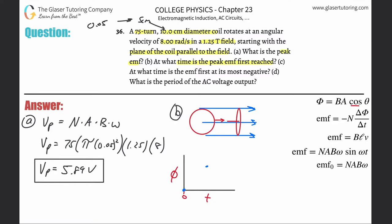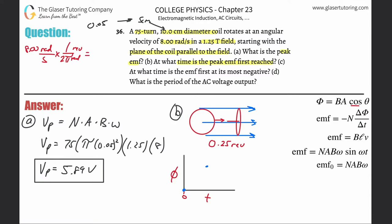We know the angular velocity is 8 radians per second. Converting to revolutions per second: 8 radians/s × (1 revolution / 2π radians) = 8 / (2π) ≈ 1.27 revolutions per second. So the coil makes 1.27 full revolutions every second.